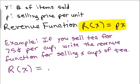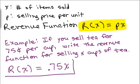Let's use decimals because usually we do things in dollars and cents. So that would be 0.75x. And there it is, there is our revenue function.